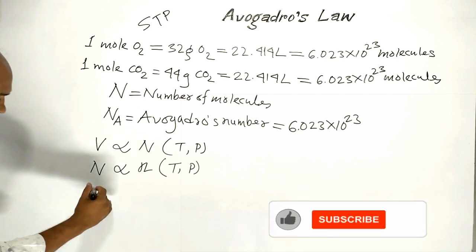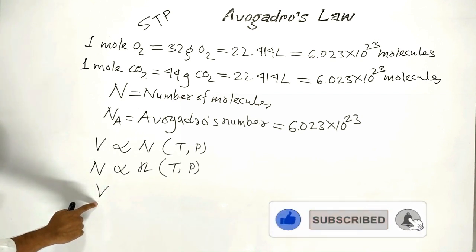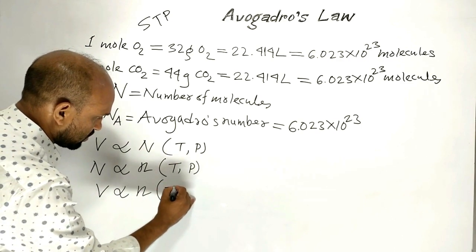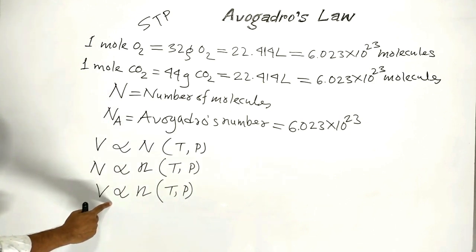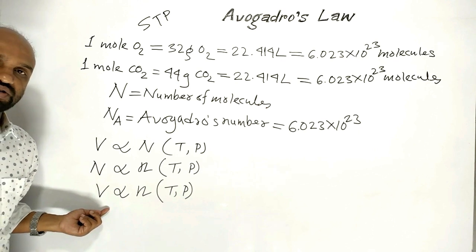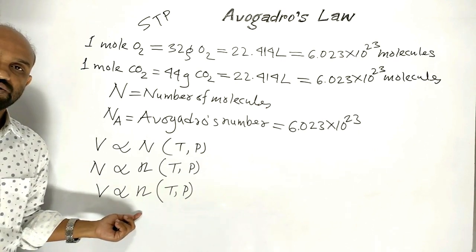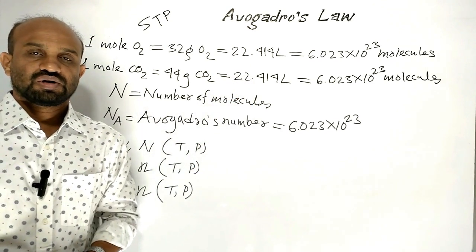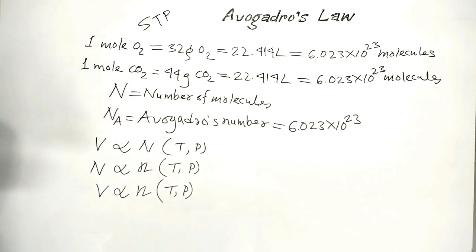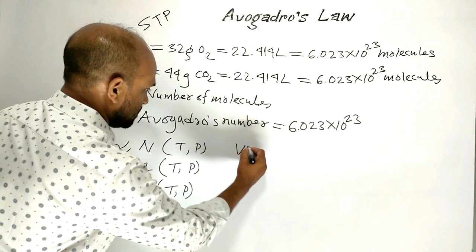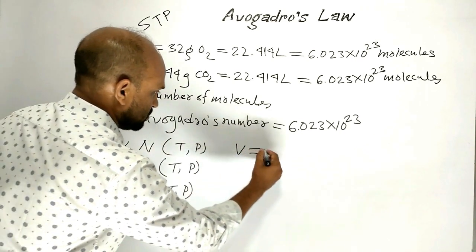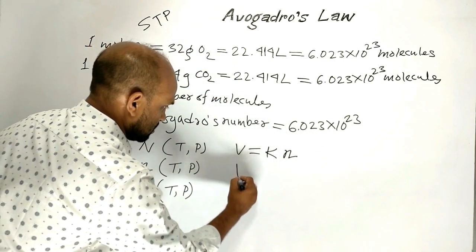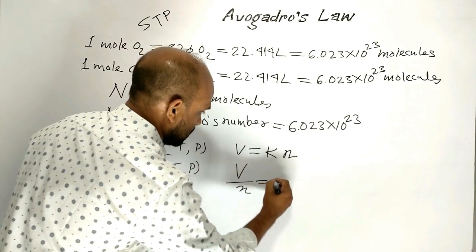From these two equations, we can write that the volume of a definite mass of any gas is proportional to the number of moles under similar conditions of temperature and pressure. This is Avogadro's Law. Equal volumes of all gases contain equal numbers of molecules under similar conditions of temperature and pressure. From this, we can write V = k·n, where k is a constant. Therefore, V/n = constant.